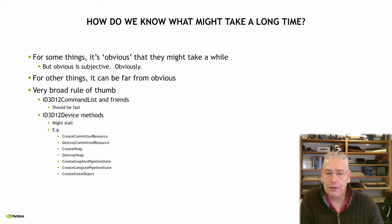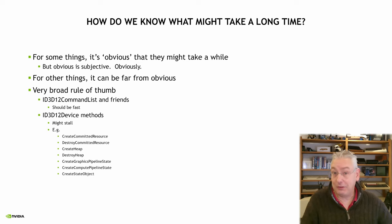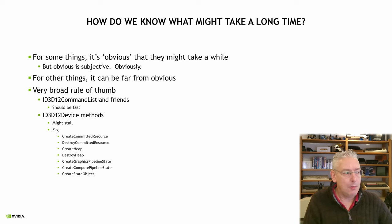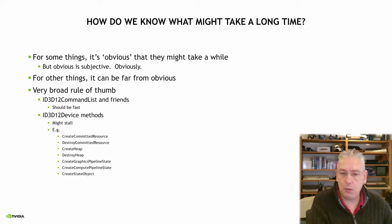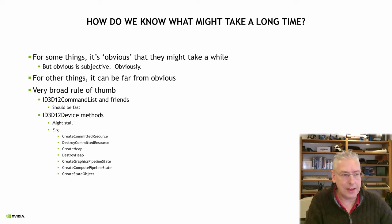As a broad rule of thumb, you can think of any methods that are on the command list — things like draws, change pipeline state, set descriptor tables — those are just involved in recording a command list, so they should be very, very fast. But any methods on the D3D device: if you find yourself putting a call to a method on the device in part of the frame path, then just pause, take a step back, and think about what would happen if this were to stall.